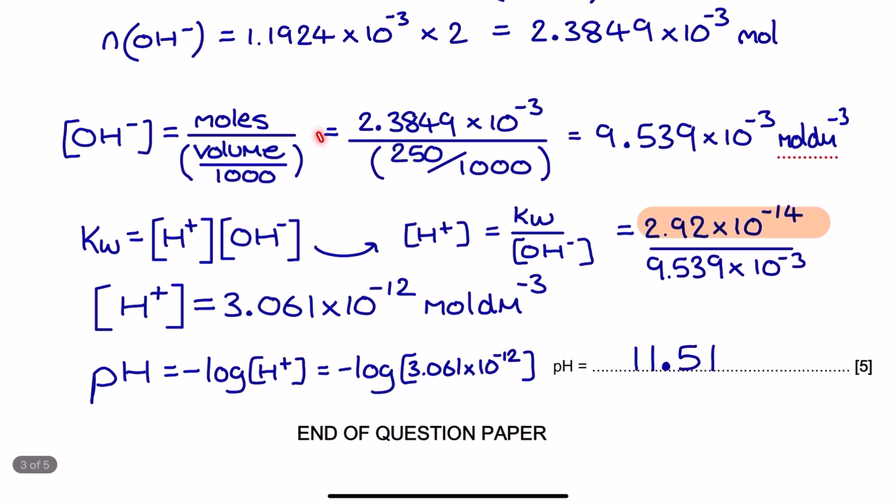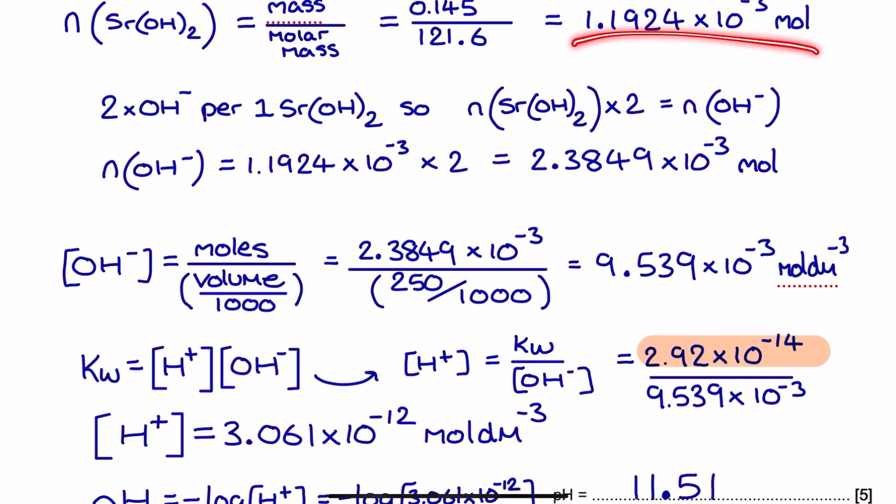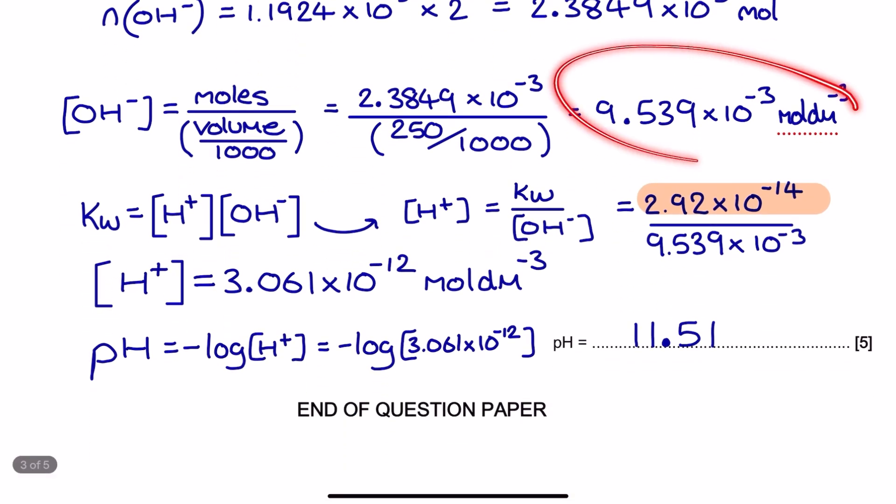The next step is to do moles over volume so that I can figure out the concentration of OH- that's going to be in that 250 cm3 strontium hydroxide solution. The exam mark scheme did suggest that lots of people forgot to do the times 2 here, but you could still get error carried forward if you took the mole value from up here and divided it by the 250 over a thousand, as long as your working out was clear. But of course here I'm going to work with the correct values and I get a concentration of OH- which is 9.539 times 10 to the power of negative 3.